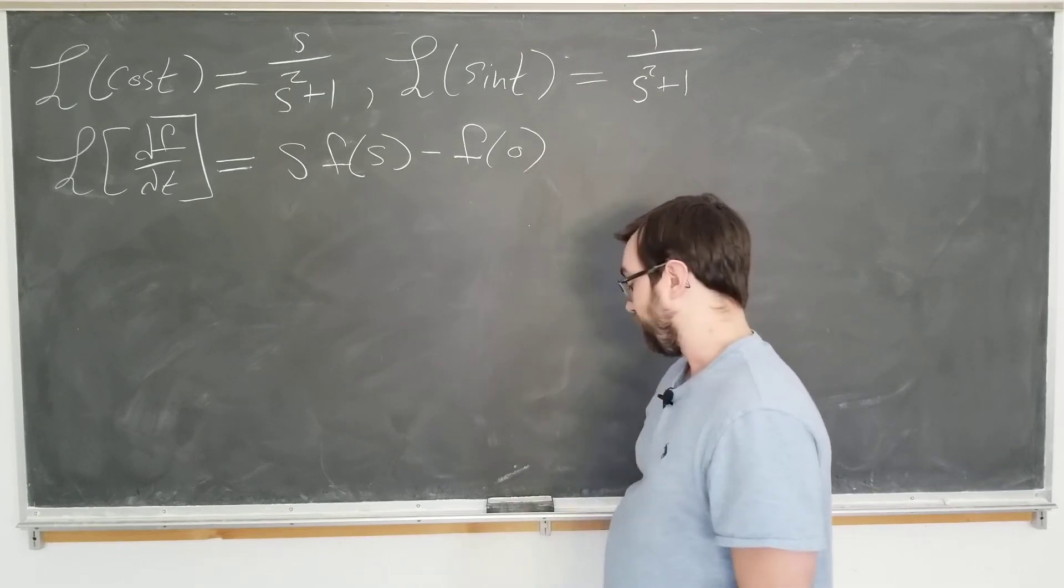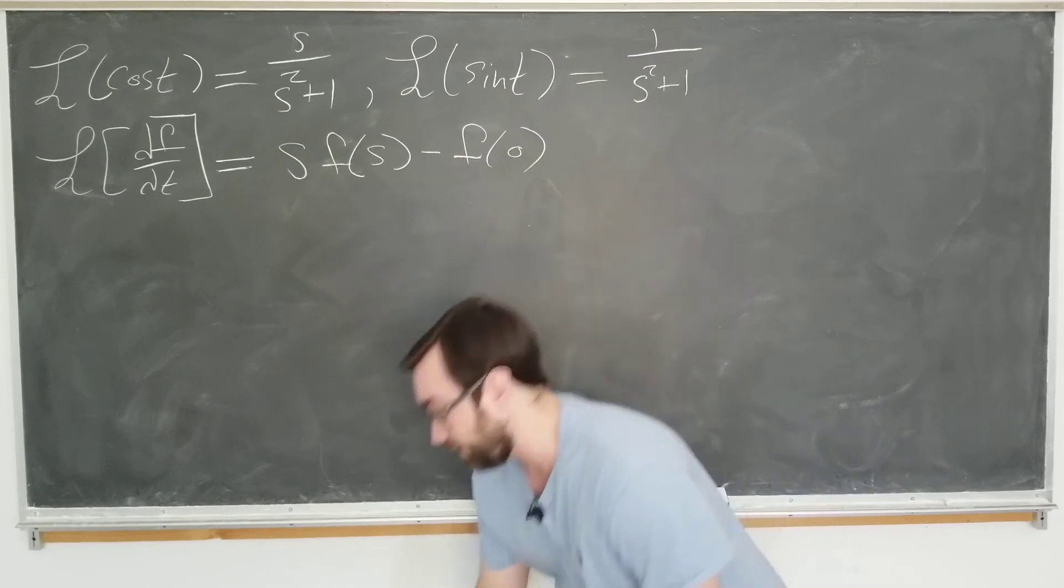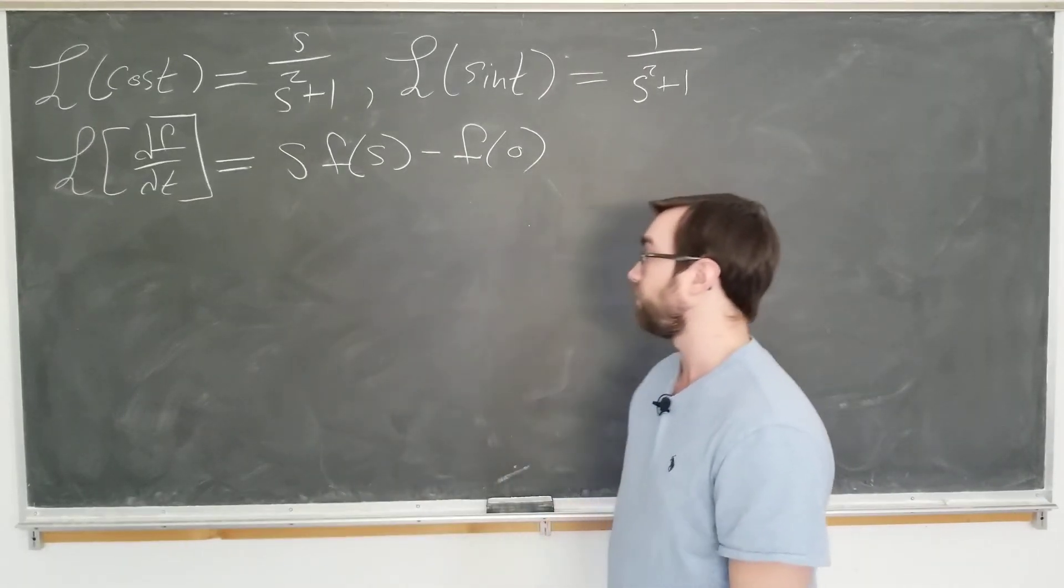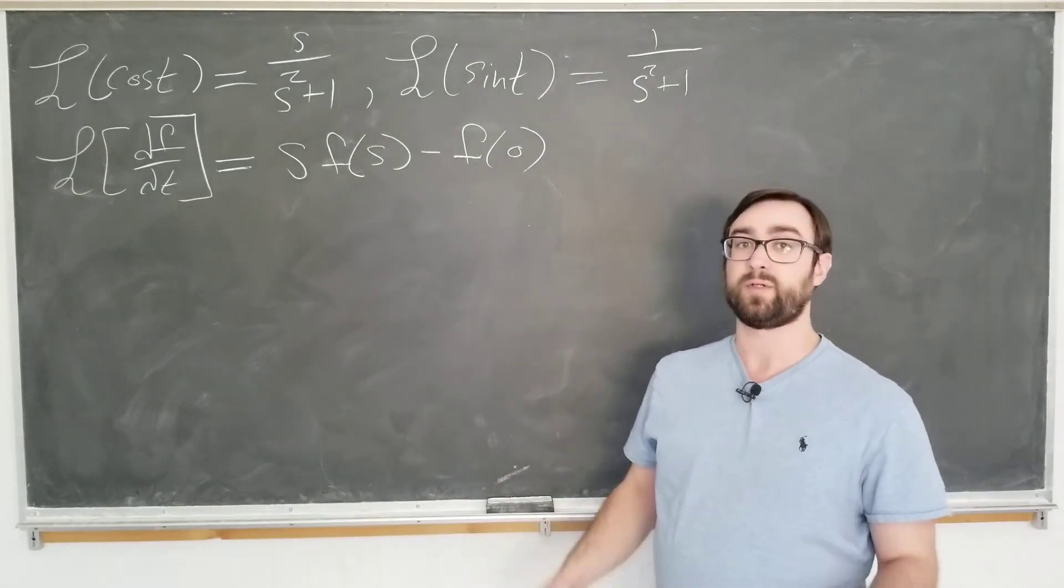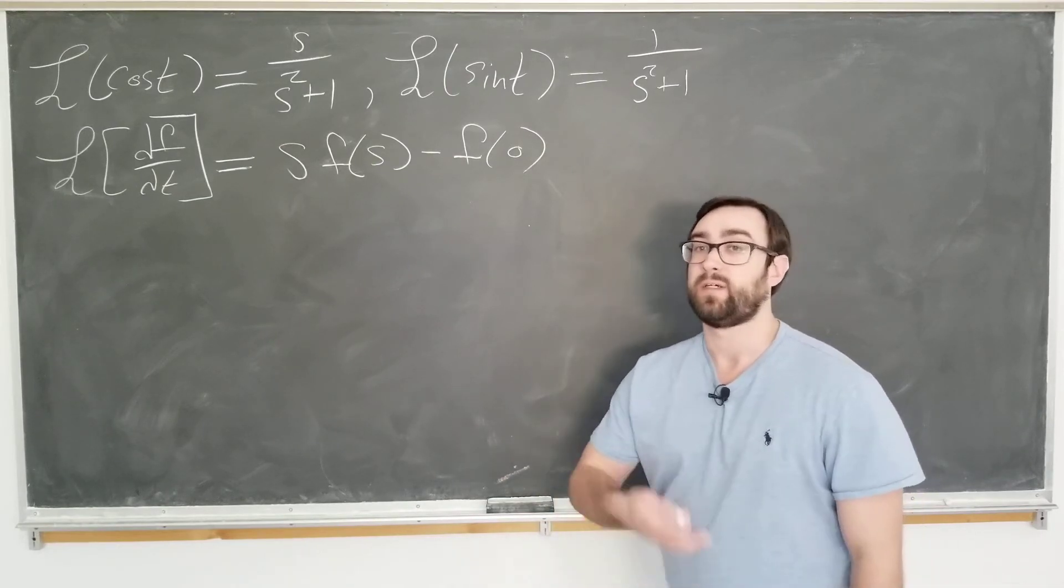The first term is the important one. The second term is just an initial value which is often 0 or sometimes it's 1. It's not as significant. In fact, it is going to be 0 here, since we are now going to consider the Laplace transform of the derivative of the sine function.